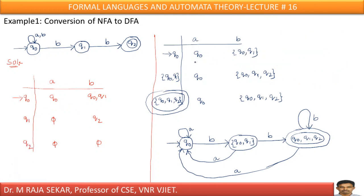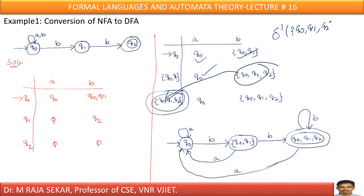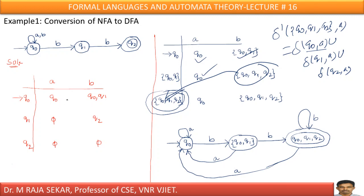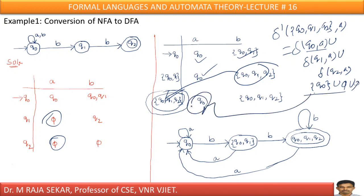Now we completed Q0Q1. Next, just take this Q0Q1Q2 state here. Delta dash of Q0Q1Q2 on A — according to the formula — is delta of Q0 on A union delta of Q1 on A union delta of Q2 on A. Delta of Q0 on A is Q0; delta of Q1 on A is empty; delta of Q2 on A is also empty. Therefore, I will get the set Q0.